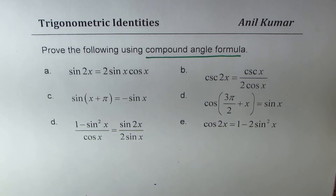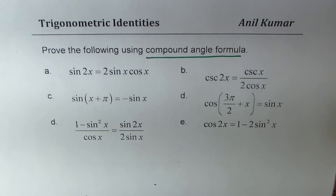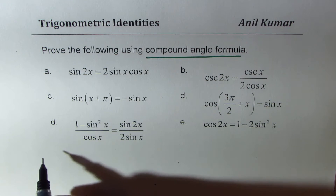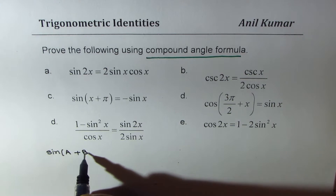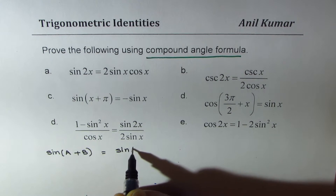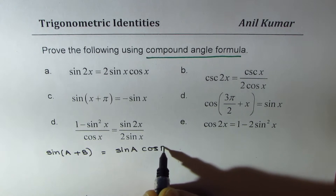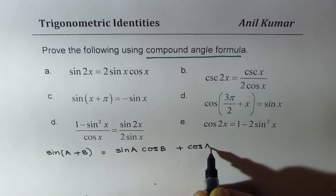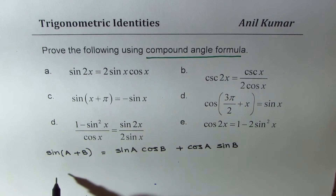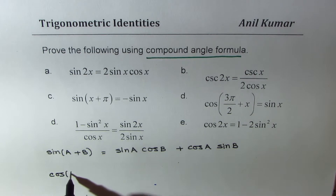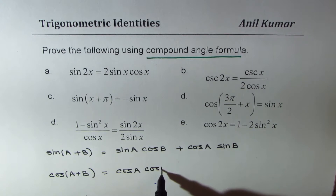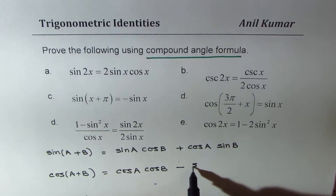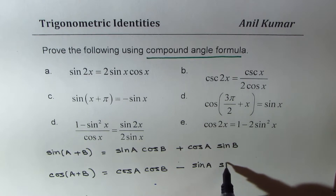Let me first give you the compound angle formula. You can always pause this video, copy the question, try it out, and then look into my suggestions. The compound angle formula for sine and cosine is: sine(A + B) = sine A cos B + cos A sine B, and cos(A + B) = cos A cos B − sine A sine B.